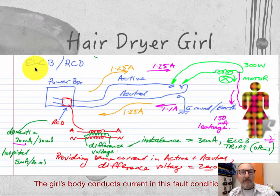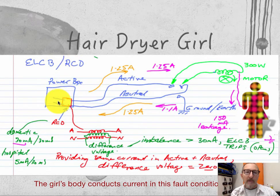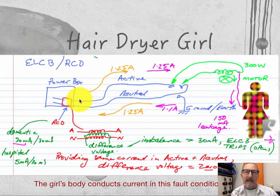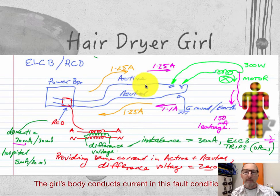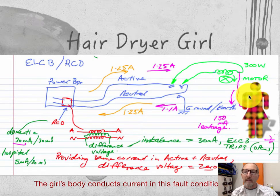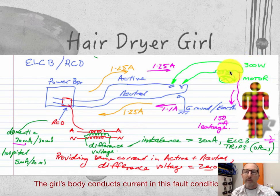Now onto the ELCB and RCD. Here's our power box in the building with the RCD. The mains coming in from the street go through the residual current device, and we have our active wire and our neutral wire. These two wires go to a power point — there are three wires total. The bottom wire goes to ground, and here are our active and neutral terminals. And this girl — let's call her 'hair dryer girl' — she's using a hair dryer rated at 300 watts.